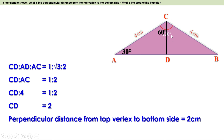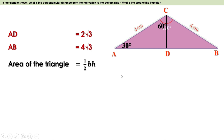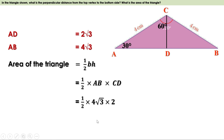Now find the area. Area = ½ × base × height = ½ × AB × CD. To find AB, first find AD. Since CD:AD:AC = 1:√3:2 and CD = 2, AD = 2√3. Since AD = BD, we have BD = 2√3. Therefore AB = AD + BD = 2√3 + 2√3 = 4√3 cm. Area = ½ × 4√3 × 2 = ½ × 2 × 4√3 = 4√3 cm².